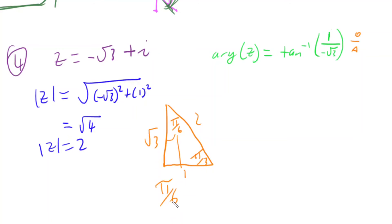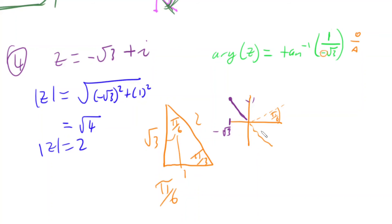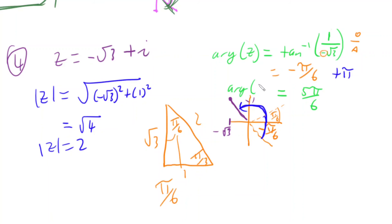But that's the equivalent positive angle, and I've got a negative root 3. Drawing my diagram — the complex number is negative root 3 real and positive 1 imaginary, so it's in quadrant 2. Tan has given me negative pi on 6, meaning quadrant 4. I need to add pi: negative pi on 6 plus pi gives 5 pi on 6. So the final answer for z is 2 cis 5 pi on 6.